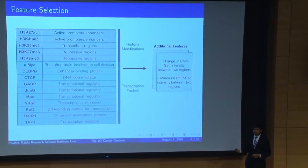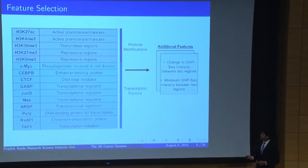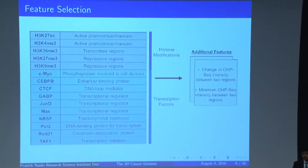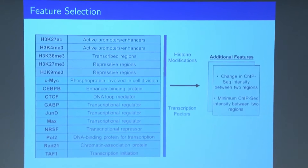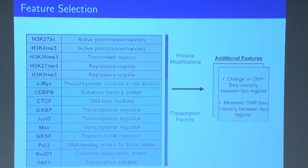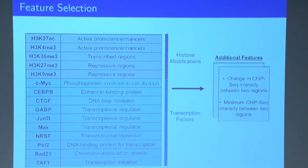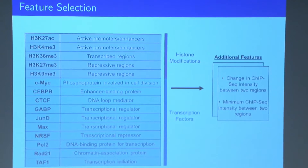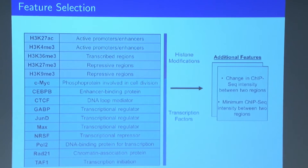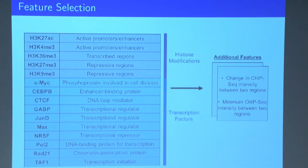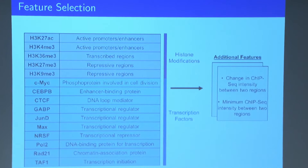From here, we did feature selection. We began by identifying five histone modification factors, which references the accessibility of DNA to different proteins, as well as 10 transcription factors, which are specific proteins that bind to individual sites of the DNA. We measured the peak intensity using ChIP-seq data for all of our CTCF regions. In addition, we included additional features such as the change in ChIP-seq intensity between two CTCF regions, as well as the minimum intensity. This formed the basis of our actual machine learning prediction algorithm.